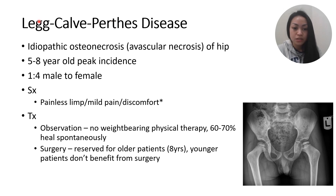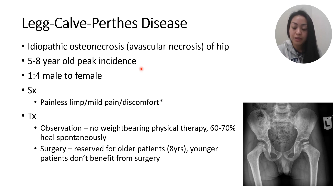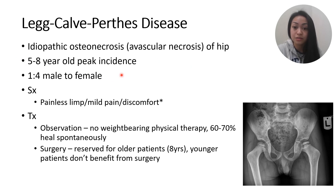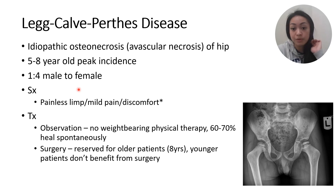The next condition is Legg-Calvé-Perthes disease — the idiopathic osteonecrosis of the hip. The peak incidence is much younger than SCFE: around 5 to 8 years of age. It has a 1-to-4 male-to-female ratio, so it's more common in females — another difference from SCFE, which is more common in males.